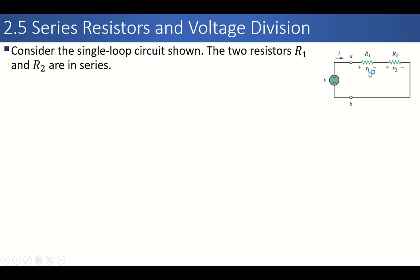So R1 and R2 are in series. We have also connected voltage supply — that is battery V — also in series with R1 and R2, so all three components are in series. In this single-loop circuit there are three components: one voltage source and two resistances R1 and R2. These two resistances R1 and R2 are connected across terminals A and B. The voltage source V is also connected across nodes A and B. This is obviously a series circuit, so only one current will be flowing — the current provided by the battery.